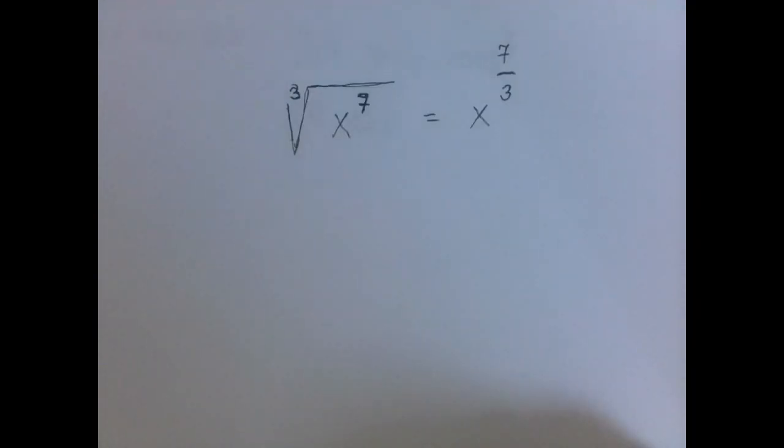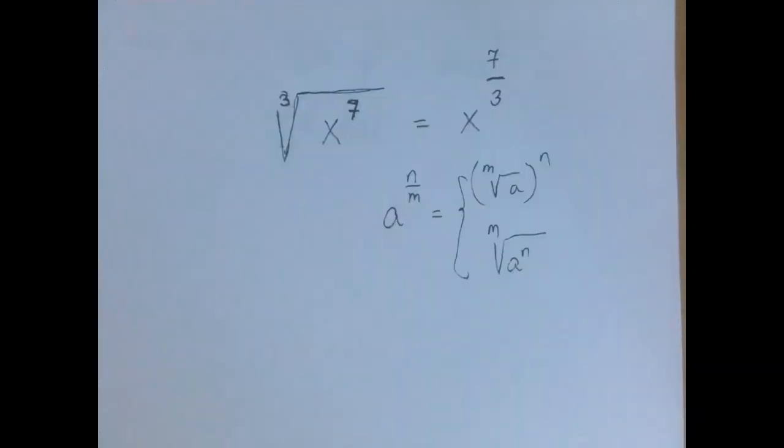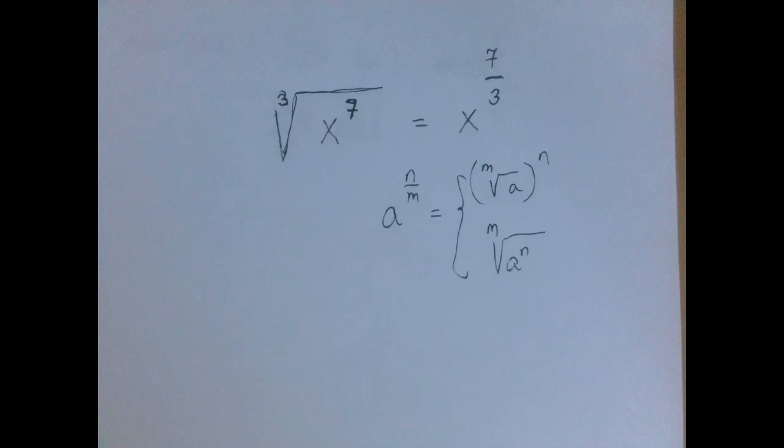Recall that the rule of exponentiation that we're using here is that a to the n over m is, well actually it has two forms if it exists. It's either mth root of a to the nth power or a to the nth power and then the mth root of it.